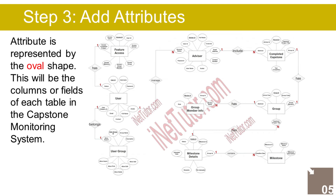The Feature Access entity has the following attributes: User ID (foreign key), Access Advisor, Access Group, Access Group Members, Access Milestone, and Access Completed Project.